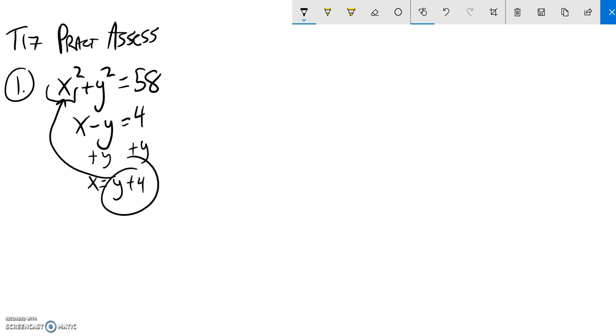I could rewrite this - this says x squared. Well, x is just y plus 4, so that's (y + 4)² + y² = 58.